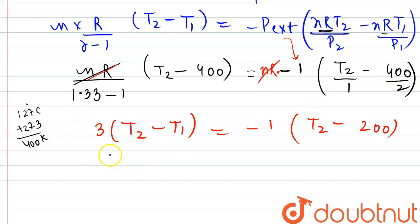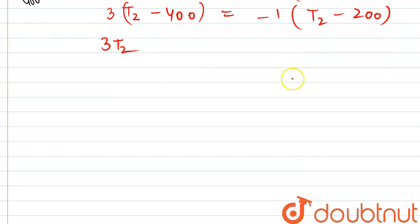So it will finally become 3T2 minus 400 is equal to minus 1 times T2 minus 200. On opening this it becomes 3T2 minus 1200 is equal to minus T2 plus 200. So from here the value of T2 comes out to be 350 Kelvin.